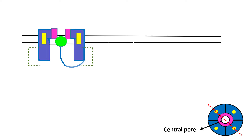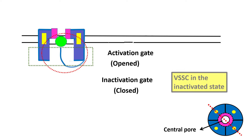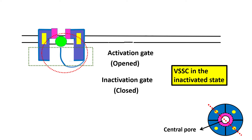In the third conformation, the activation gate is open but the inactivation gate is closed — it has blocked the central pore. In such a situation, the voltage-sensitive sodium channel is said to be in the inactivated state.